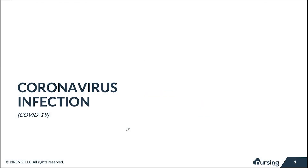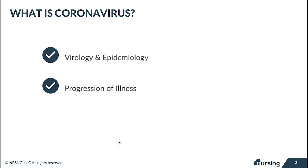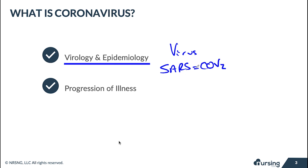In this lesson we're going to talk about the coronavirus infection, or COVID-19, covering everything from virology and epidemiology to testing, treatment, nursing implications, and patient education. The virus itself is known as SARS-CoV-2, while COVID-19 is the actual illness designated by the World Health Organization — that's the key difference between those two terms.